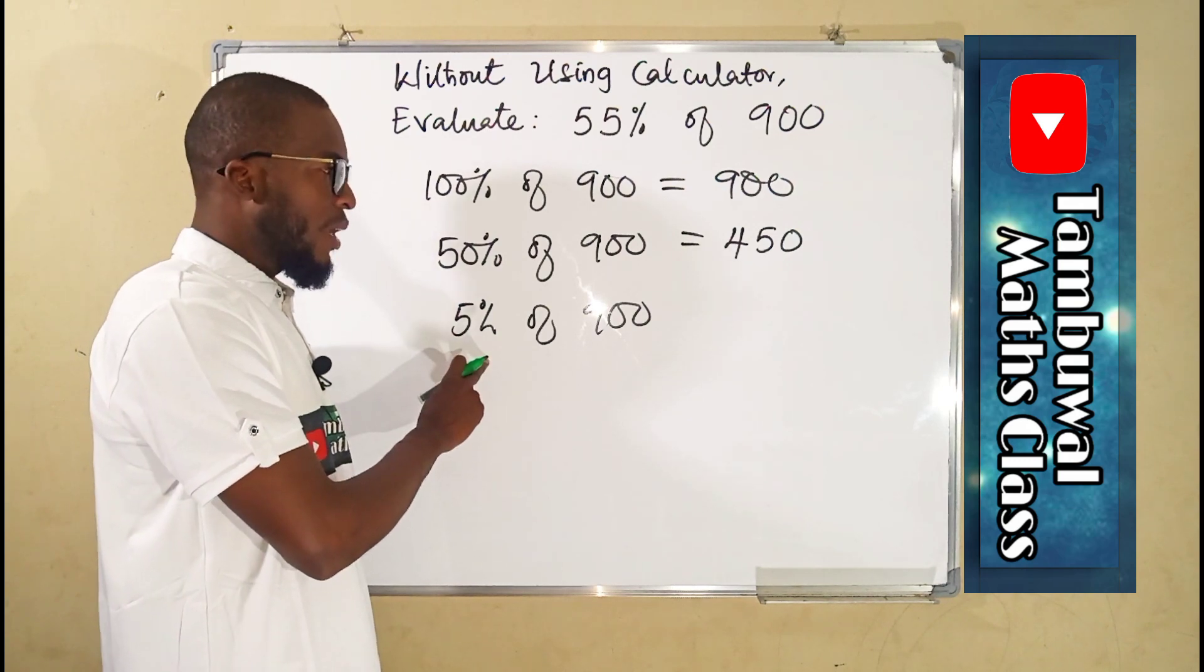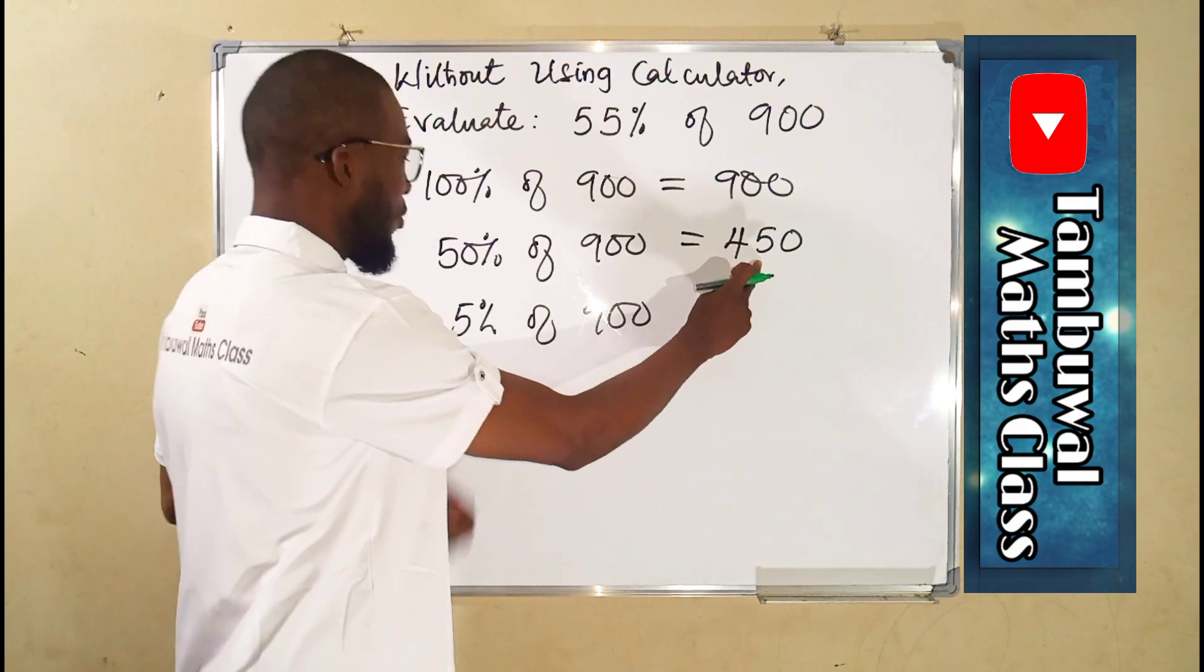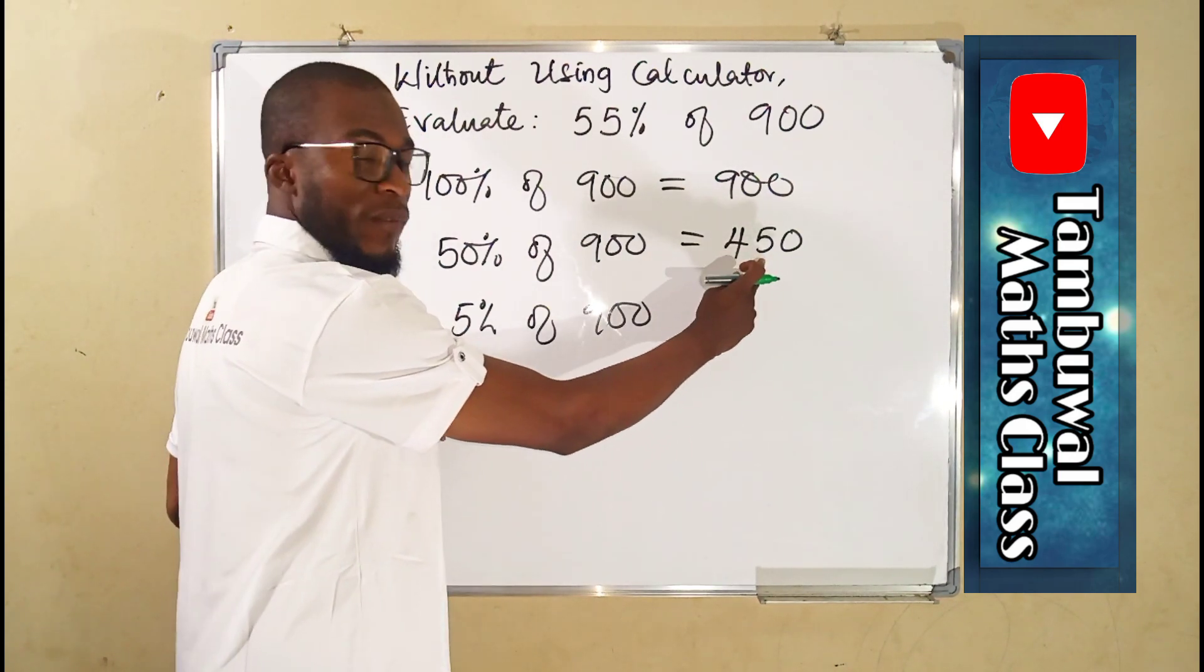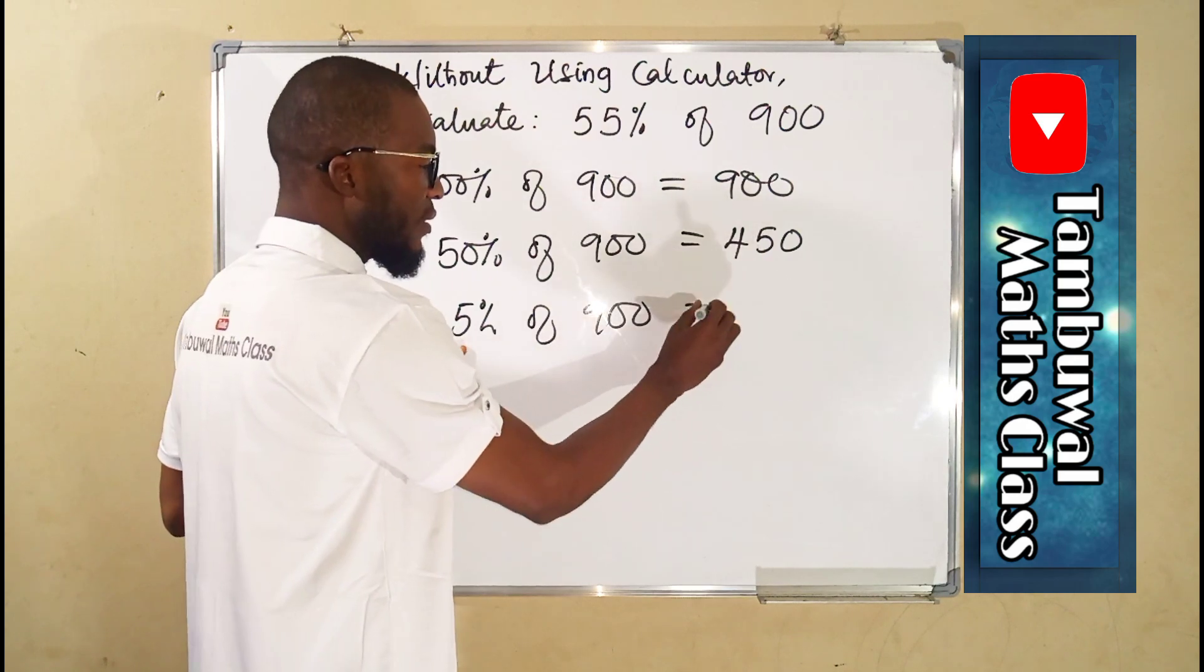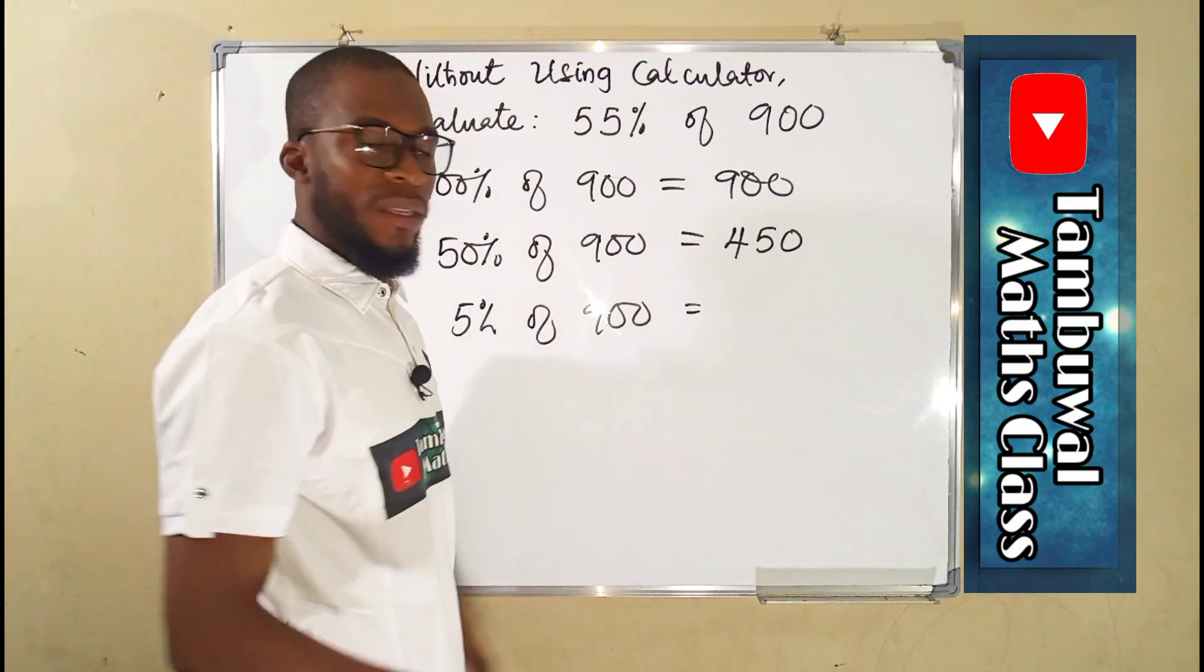And hence we are going to divide this by 10. Because this is 50%, we have divided 50% to get 5%, and hence the result is going to be divided by 10. 450 divided by 10, that zero will just cancel this other zero, leaving only 45.